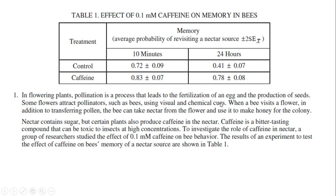Some flowers attract pollinators like bees using visual and chemical cues. Bees visit flowers to collect nectar for honey. Plants produce caffeine in the nectar — caffeine is a bitter-tasting compound that can be toxic to insects at high concentrations. The researchers studied the effect of 0.1 millimolar caffeine on bee behavior. Looking at the results, the control has a lower probability of bees revisiting the nectar source, while with caffeine there's a higher probability. The key question is whether that difference is statistically significant — essentially, does caffeine in nectar improve pollination chances?